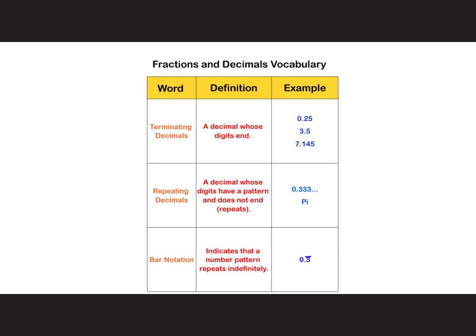Repeating decimals, on the other hand, are decimals whose digits have a pattern and does not end. It keeps repeating, hence the name repeating decimals. So the example there is 0.3333 and it's going to keep going forever.